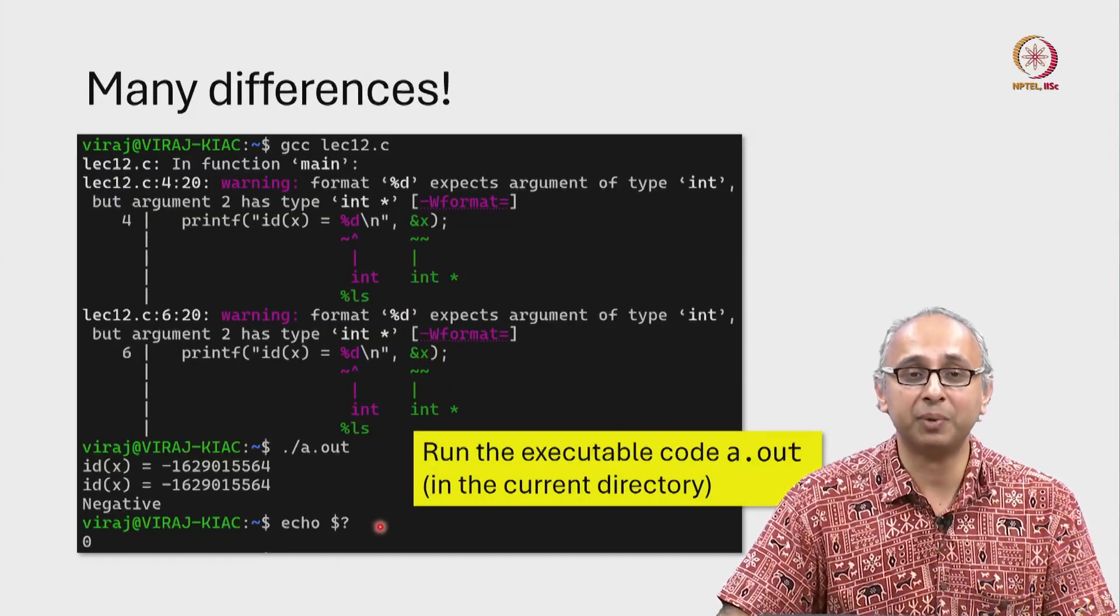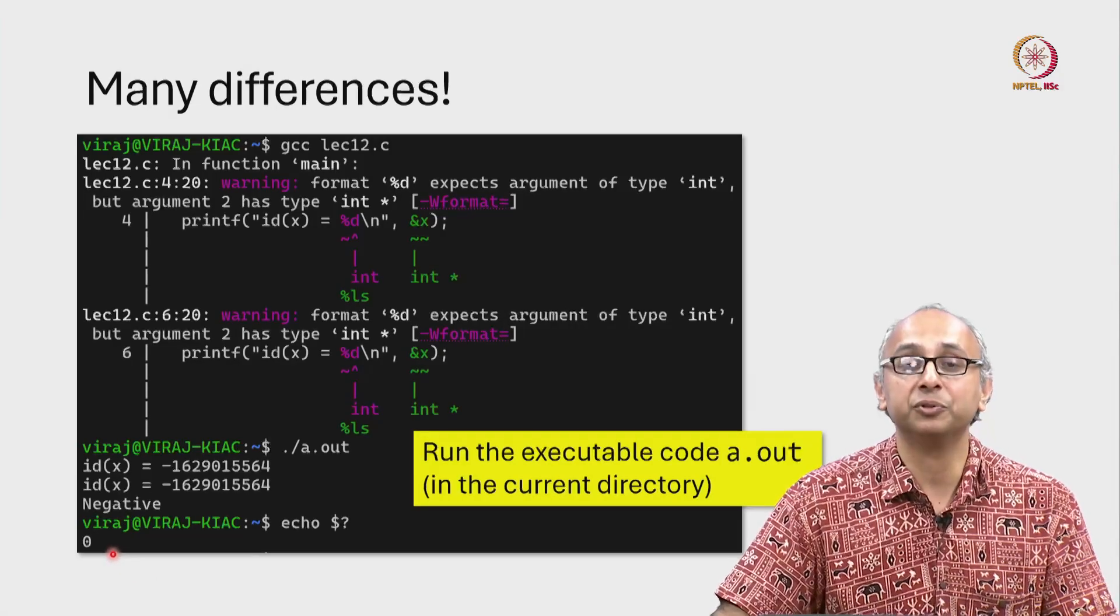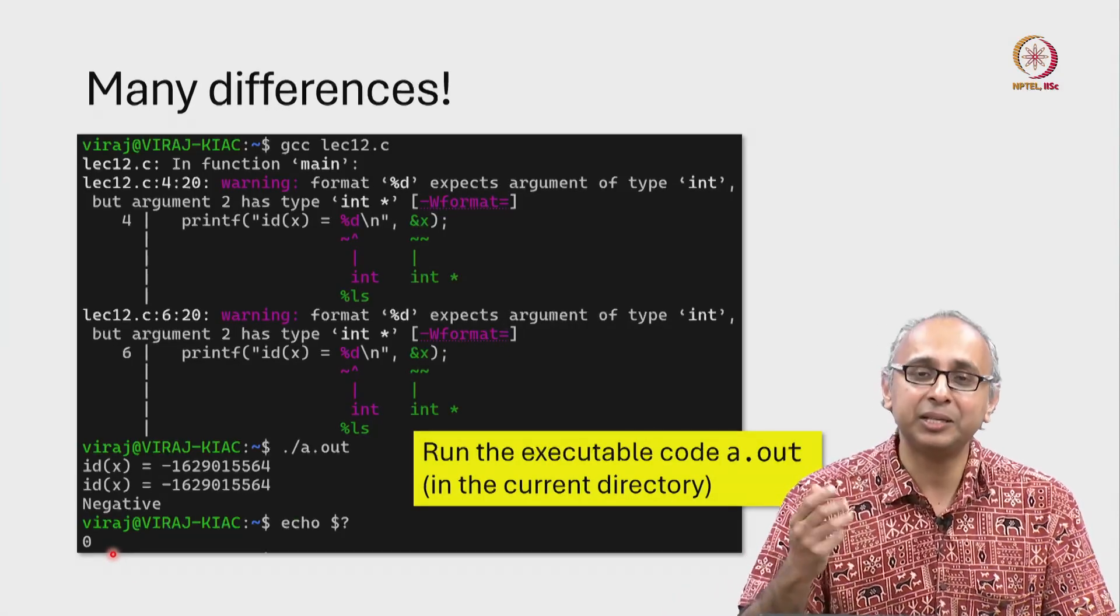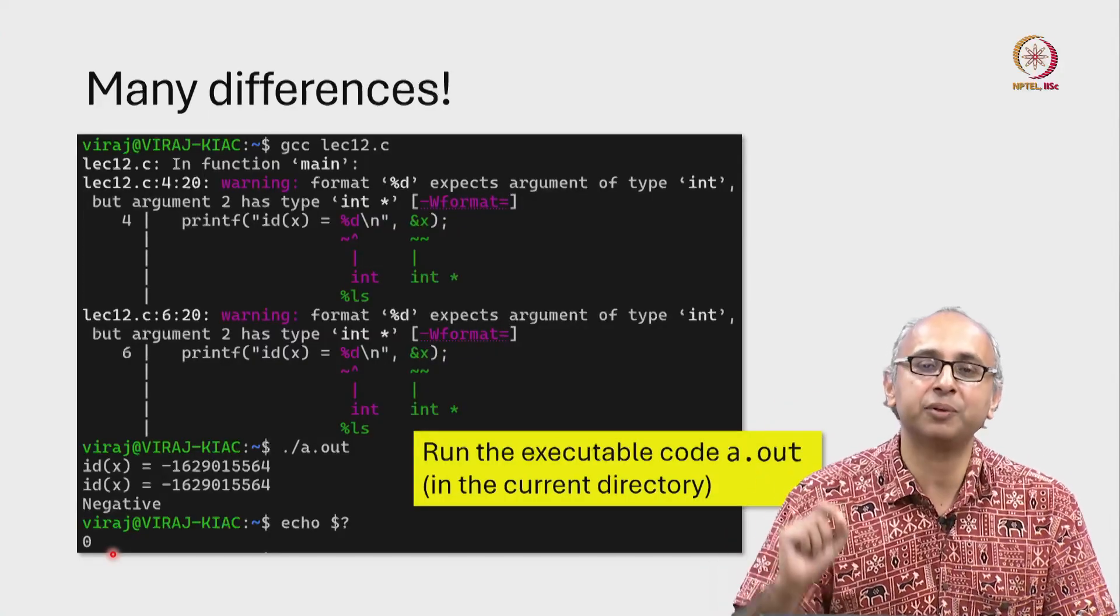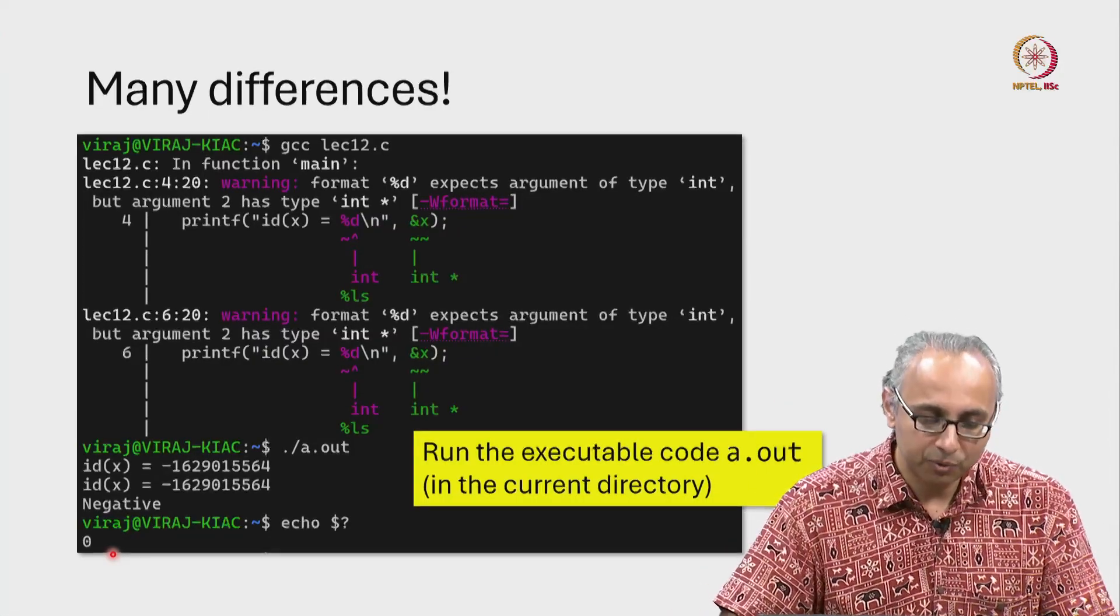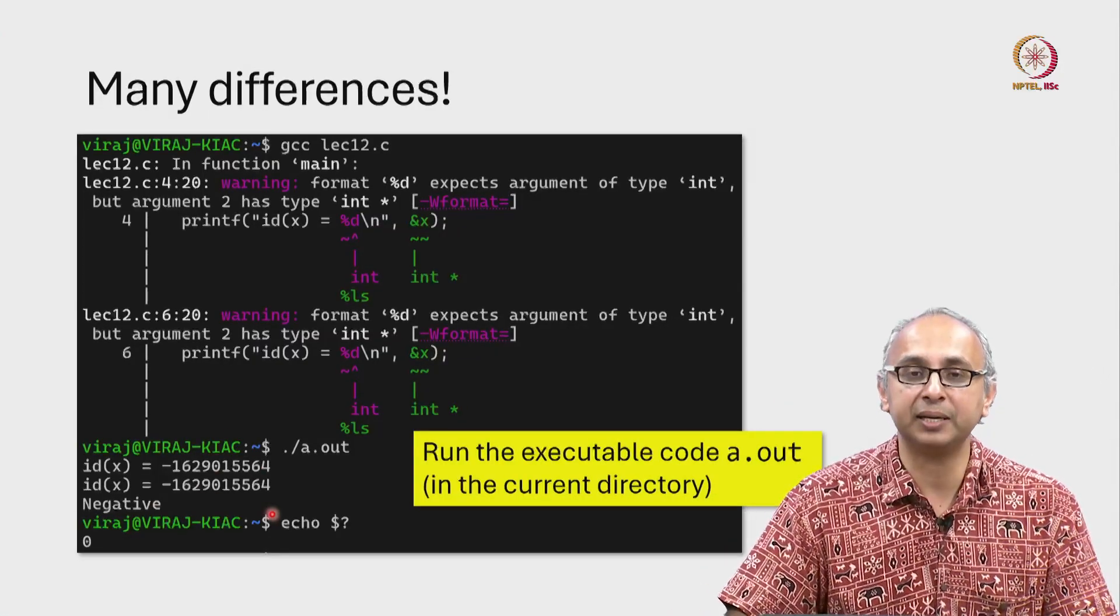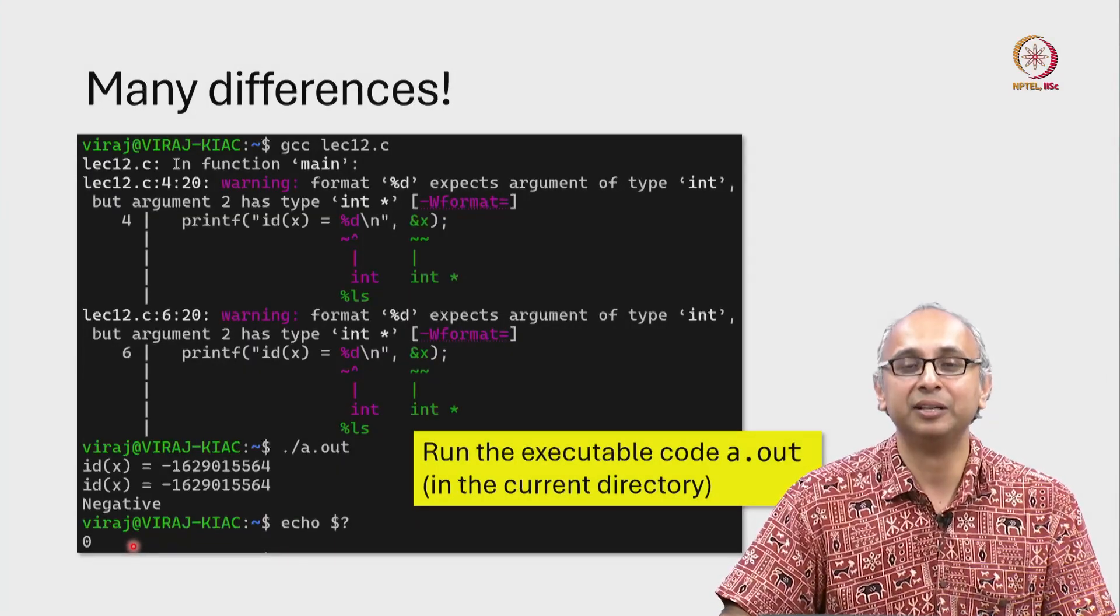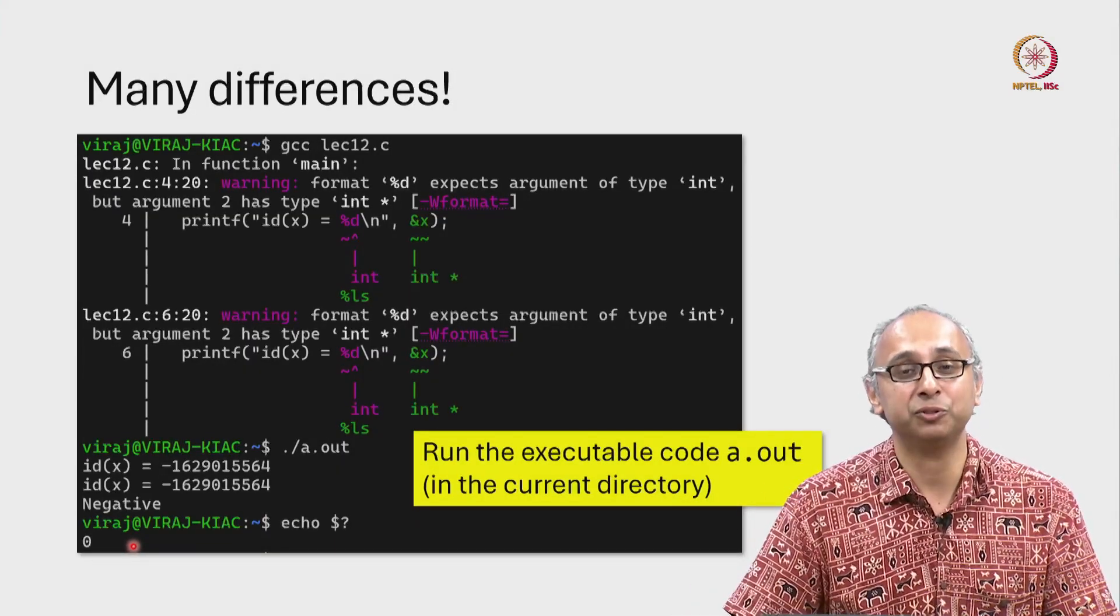Lastly, when we do echo dollar question mark, we get the value zero because that's what our main function had returned. I'd like you to do a quick experiment: change that return value to something else, run your code on a terminal like this and echo dollar question mark and see if you get a different value, the same value that you returned.